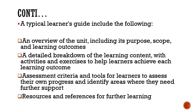To achieve all learning outcomes in the curriculum you need an accompanying learner's guide. It outlines what you need to cover for each learning outcome through a series of activities, including an overview of the unit — the unit title, introduction, purpose, scope, and learning outcomes. It also contains a detailed breakdown of the learning content as per the performance criteria in the OS and the curriculum, as well as activities and exercises to help learners achieve each learning outcome.